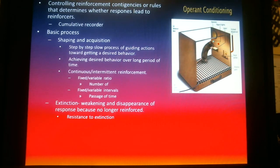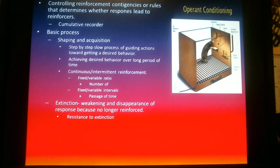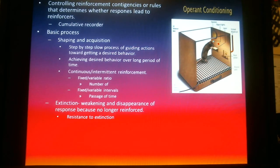Continuous reinforcement means that every single time a behavior is performed, there is a consequence or reinforcement for it. Intermittent means every so often — variable. Skinner came up with two scenarios: either using a ratio of intermittent or continuous reinforcement, which he called fixed and variable, or doing it through a passage of time, not through a number. This passage of time is called an interval, dealing with fixed and variable intervals.